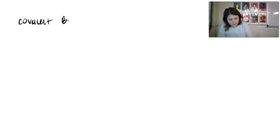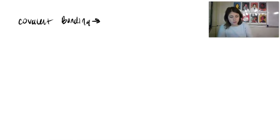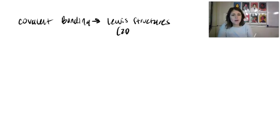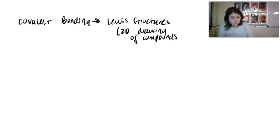In this lesson, we're going to be learning about covalent bonding, and covalent bonding is going to help us draw something called Lewis structures, which is basically a 2D drawing of covalent compounds.